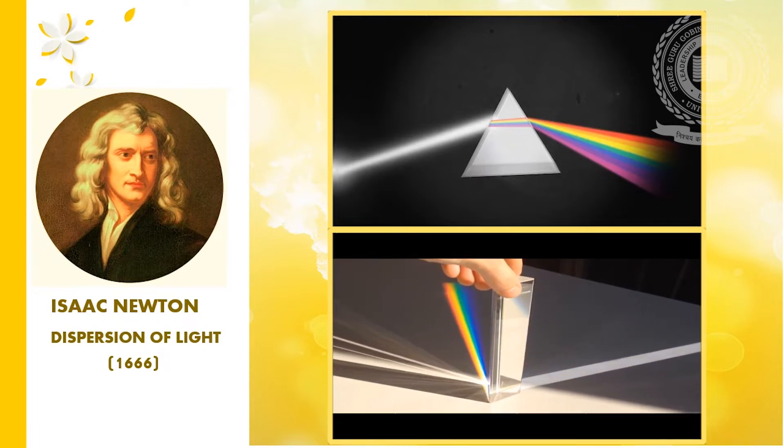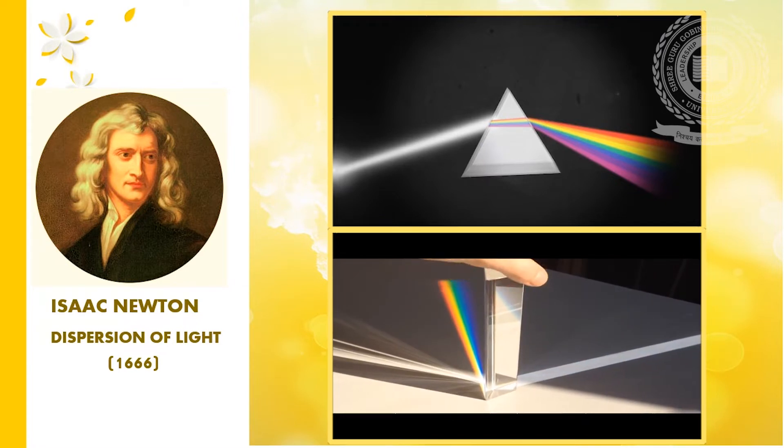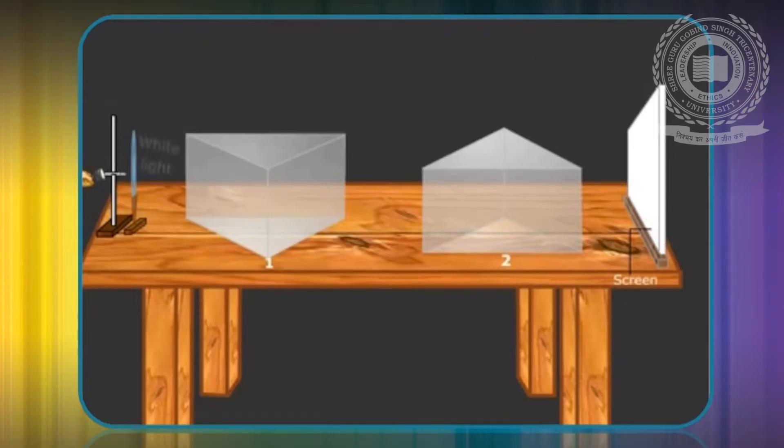By passing the dispersed light through a prism in reverse position, he observed the restoration of white light. From these experiments, Newton concluded that white light from the sun was actually composed of seven colours and each one was bent differently as it passed through the prism. Newton was the first person to use a glass prism to obtain the spectrum of sunlight called solar spectrum.